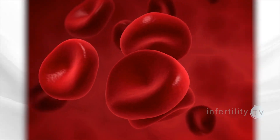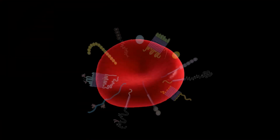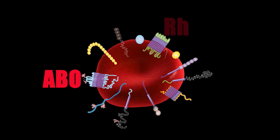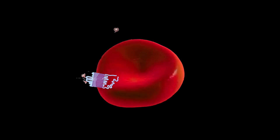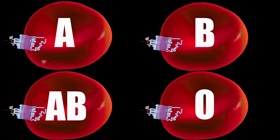First, some background. Red blood cells have markers on their surface. These markers are molecules that are made up of proteins or sugars. There are many different blood types or blood groups. The two we will focus on today are the ABO blood group and the RH blood group. Your ABO blood type is determined by sugars on the surface of your red blood cells. The four blood types are A, B, AB, and O.